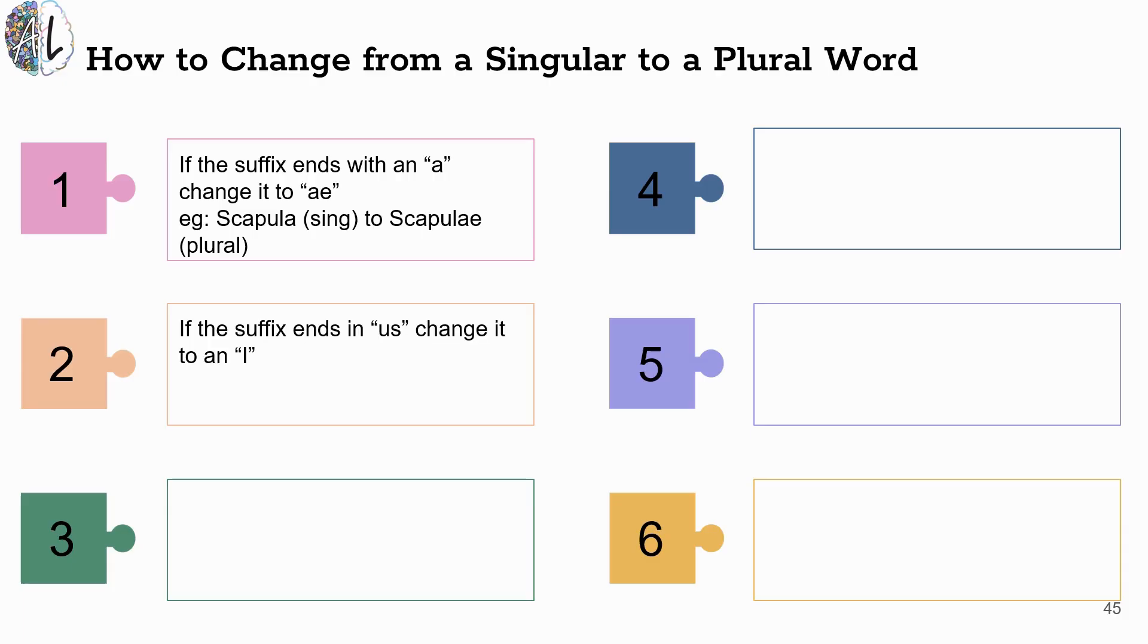If the suffix ends in the letters US, you are going to change the US to the letter I. So, for example, a syllabus is a single object, one syllabus or one packet. But if you're referring to multiple, you would change the US to letter I and refer to it as syllabi.